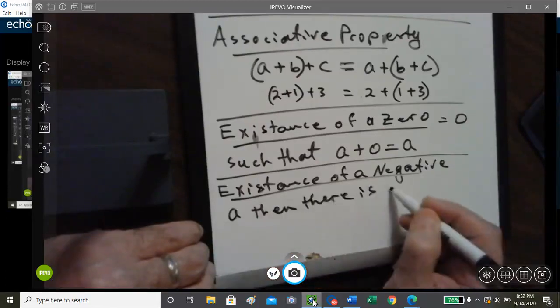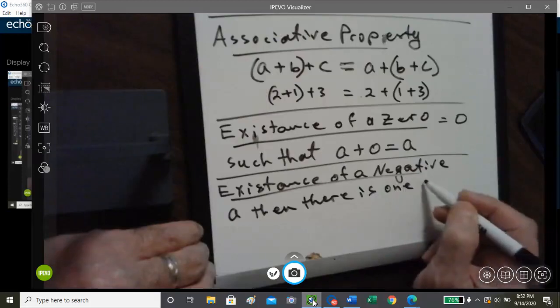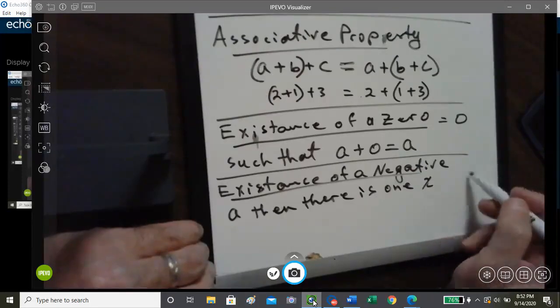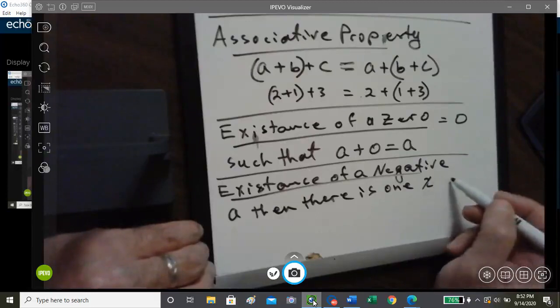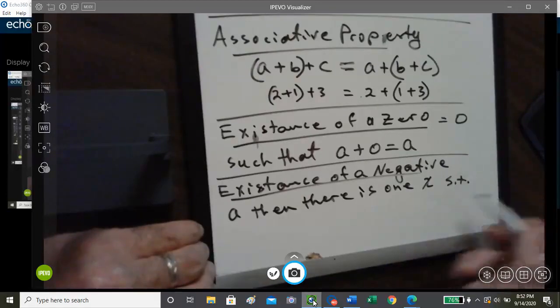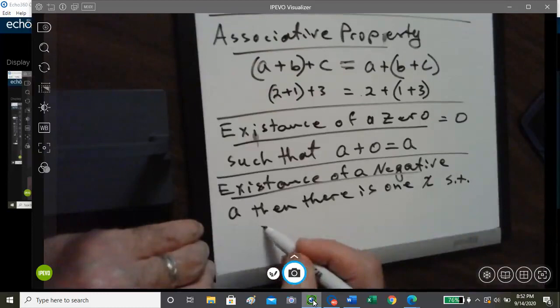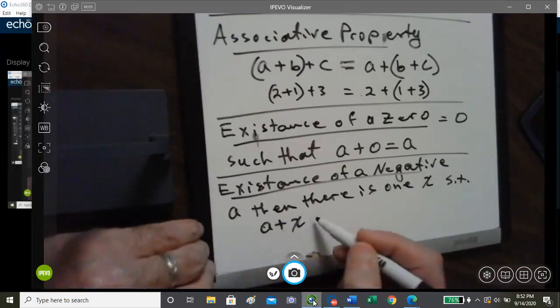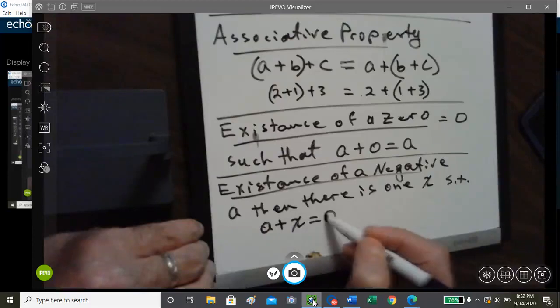And there is one, well, one and only one number X, such that A plus X equals zero.